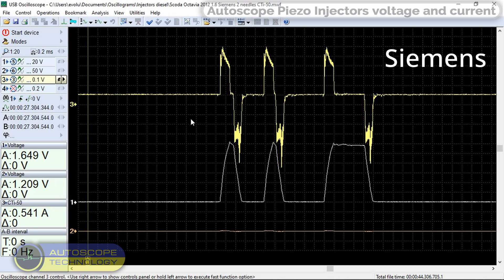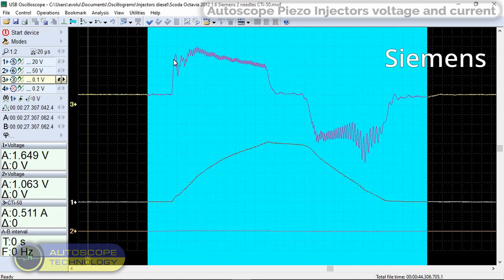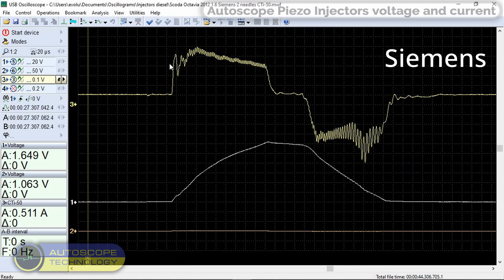Let's consider one injection pulse in more detail and analyze the signal. For convenience and clarity, we move measuring panels.